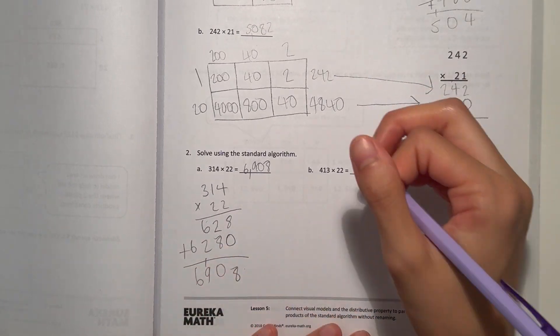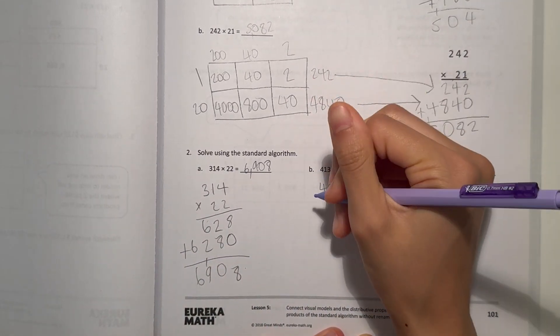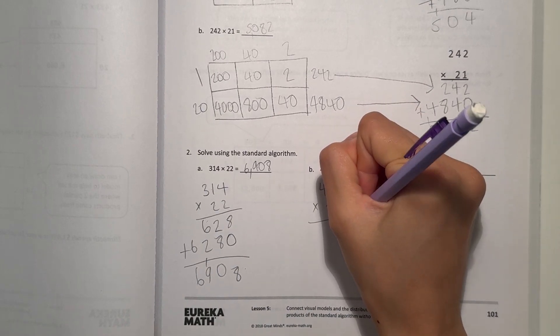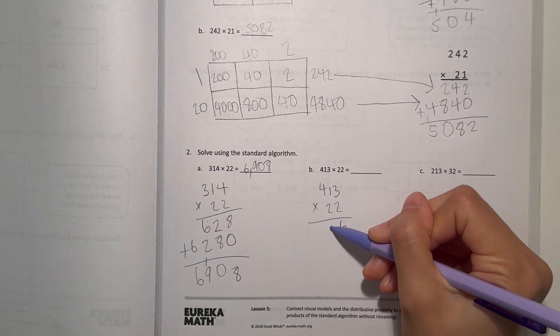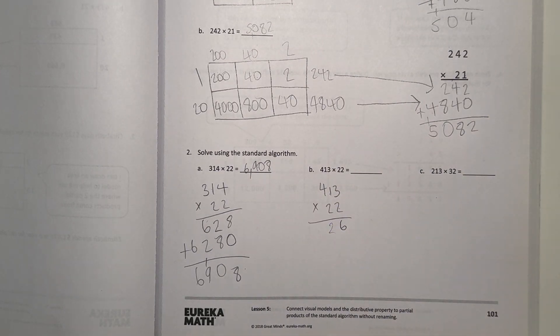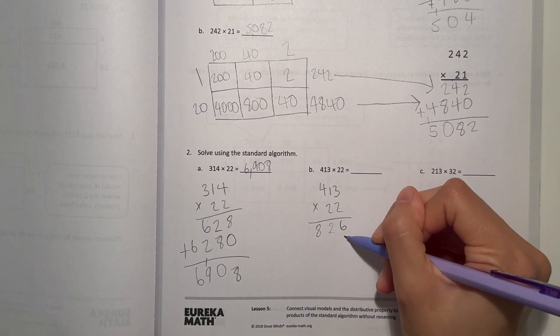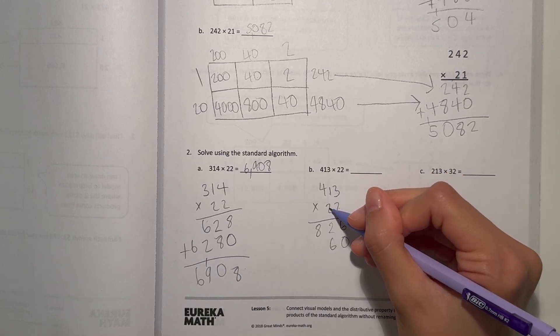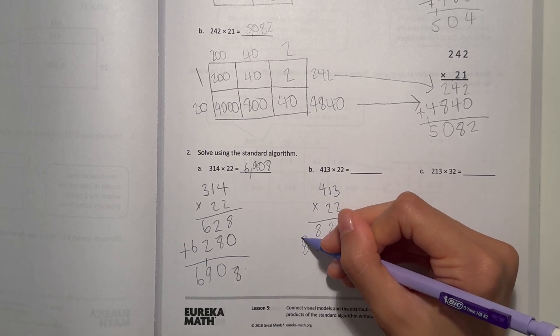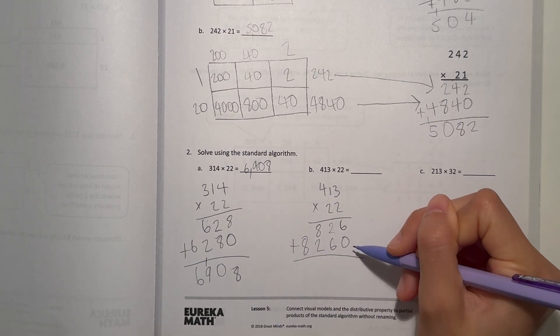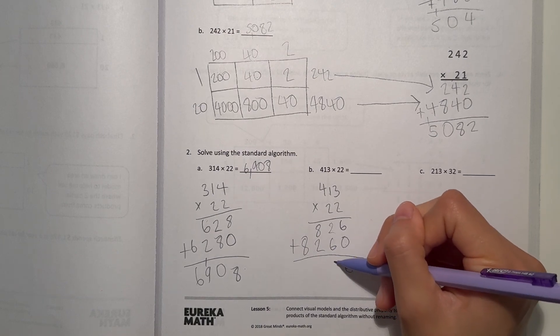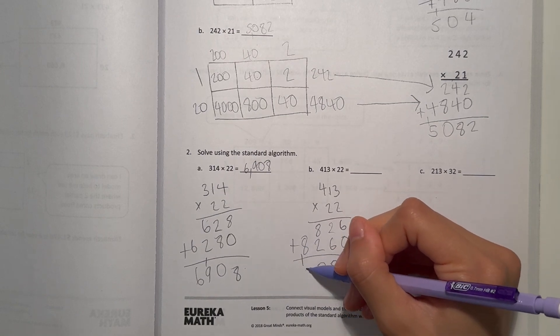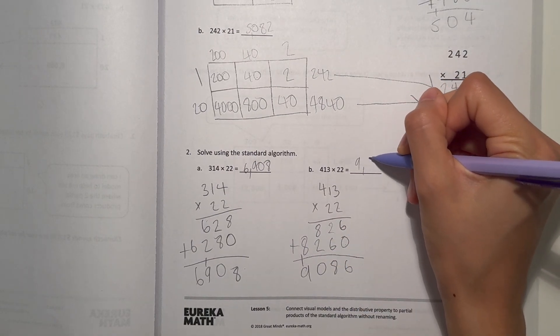Let's look at B now. 413 times 22. 3 times 2 is 6. 1 times 2 is 2. And 4 times 2 is 8. Now let's add our 0. 3 times 2 is 6. 1 times 2 is 2. And 4 times 2 is 8. So let's add. 6 plus 0 is 6. 2 plus 6 is 8. And 8 plus 2 is 10. And 8 plus 1 would be 9. So our answer is 9,086.